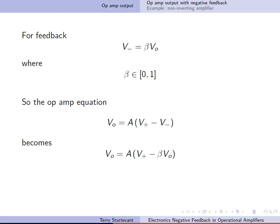So for feedback, V minus is beta times V out, where beta is between 0 and 1. So the op amp equation becomes this.